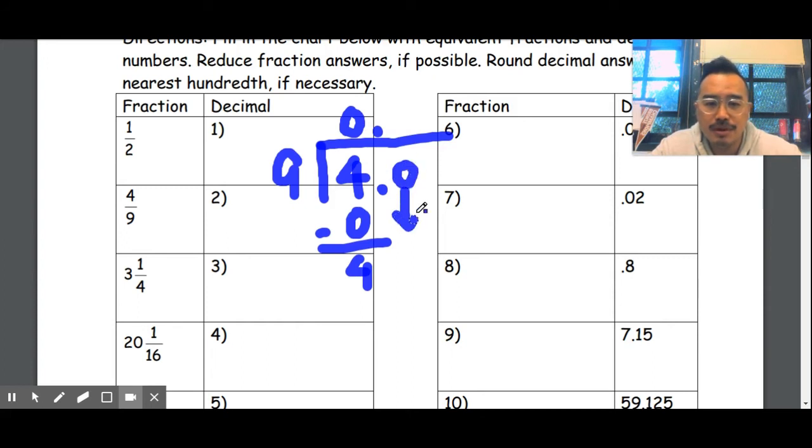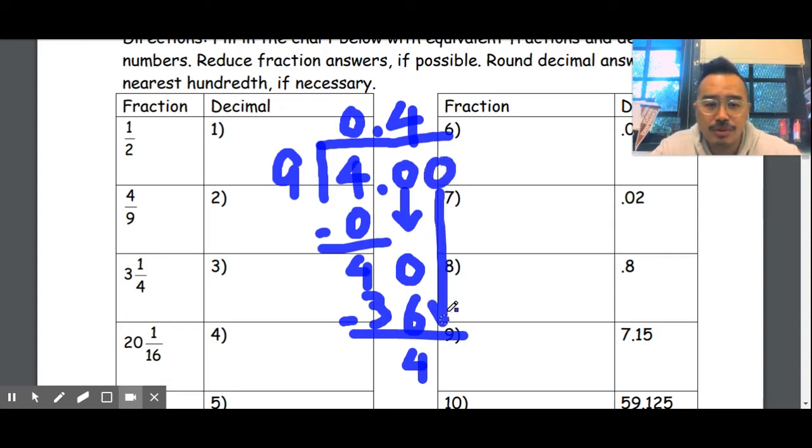All right, extend the problem, so to speak. Nine, four, thirty-six. Now I think some of you probably, right at this moment, realize what's going on, right. Let's kind of keep going. Already, it's 0.44, and then repeating. So what does it say...